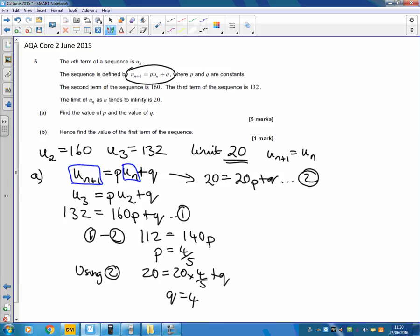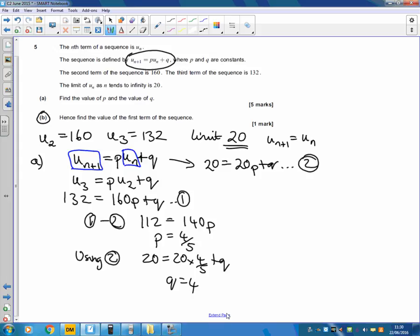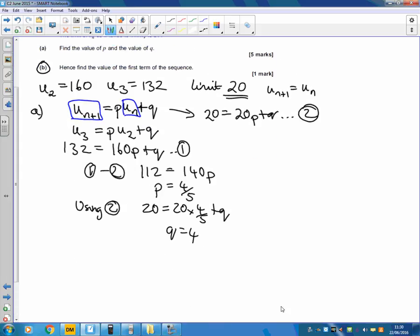The next part asks us to find the first term. What do we know? To get the second term, we use the first term. Our formula says the next term is p times the current term plus q. If we put n equals 1, we get u_2 equals 4/5 times u_1 plus 4.